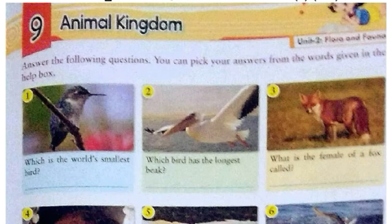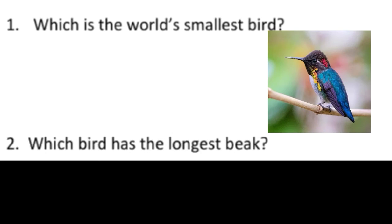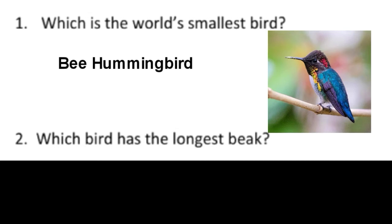Let's start with exercise number 9: Animal Kingdom. Here we can see a picture given with each question and can guess the name of these animals. Question number 1: which is the world's smallest bird? It is the bee hummingbird, only found in Cuba. It measures a mere 2 and a quarter inches long and weighs less than 2 grams.